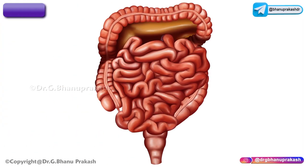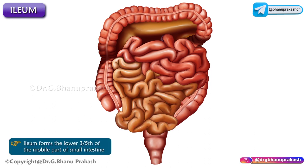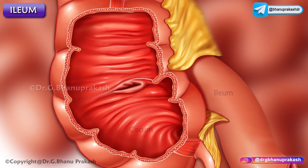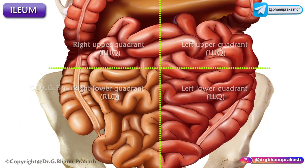Now let us discuss the anatomy of the Ilium. The Ilium is the third and last part of the small intestine, forming the lower three-fifths of the mobile part of the small intestine. It ends at the ileocecal junction, and most of the Ilium lies in the right lower quadrant.